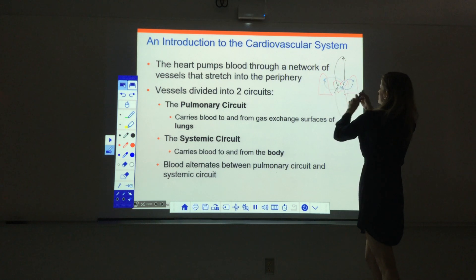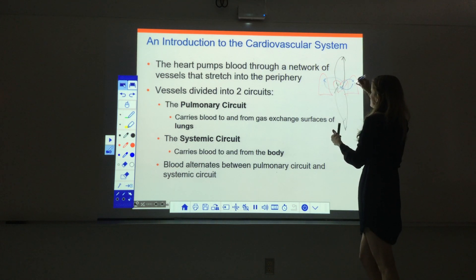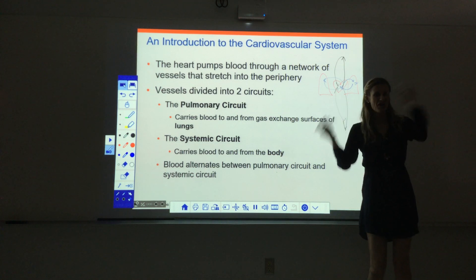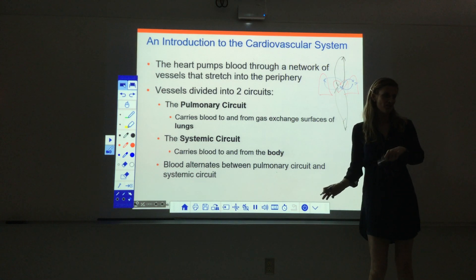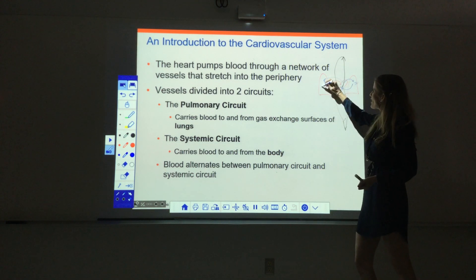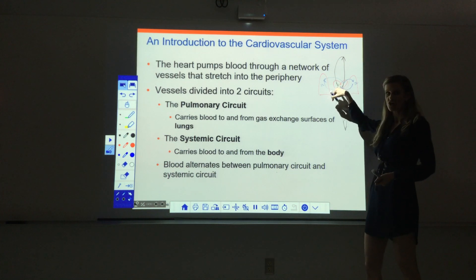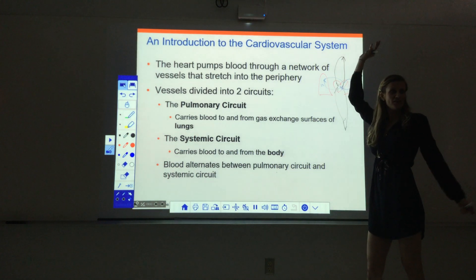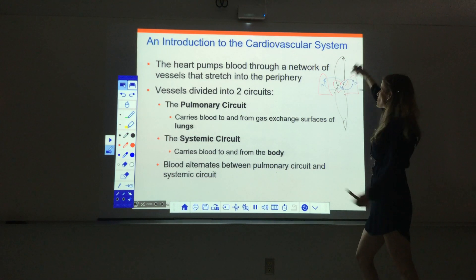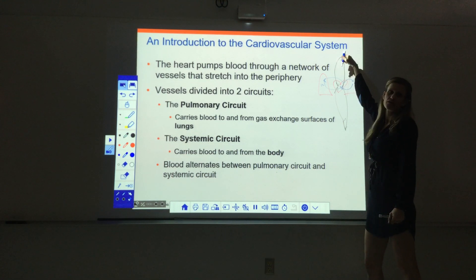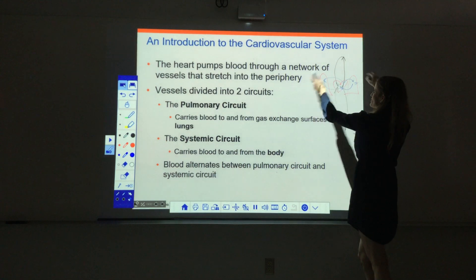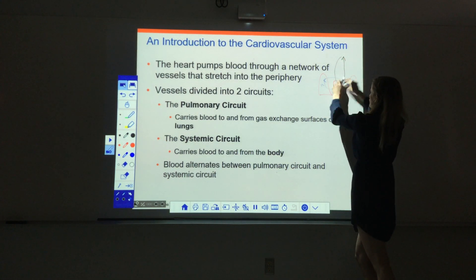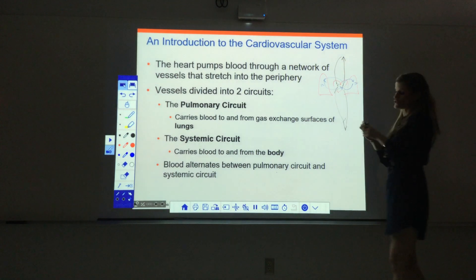Why does the blood go to the lungs? To drop off CO2 and pick up oxygen. That nice oxygenated blood comes back to the heart, and then we need to deliver it — send it out to all our tissues via the systemic circuit. So the pulmonary circuit picks up the oxygen, the systemic circuit delivers it, and the blood just alternates back and forth between those two circuits.